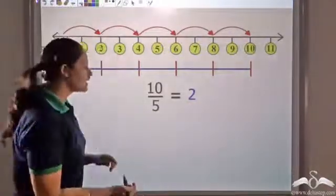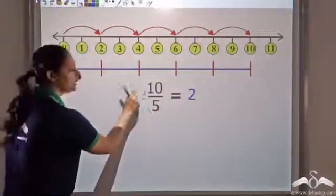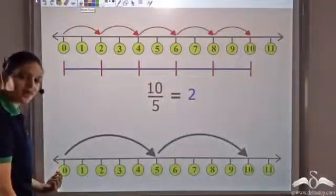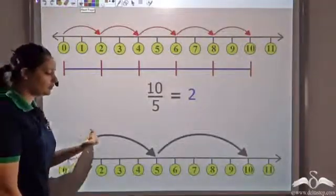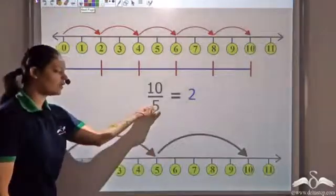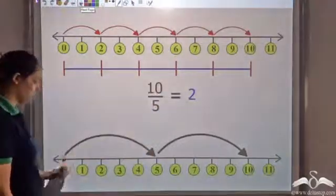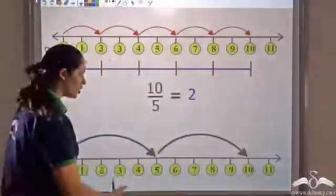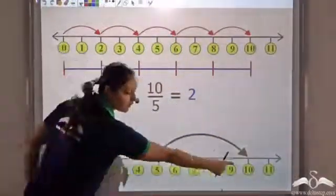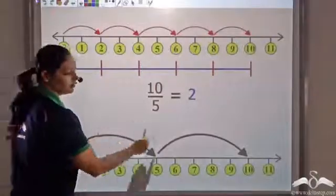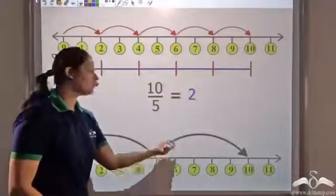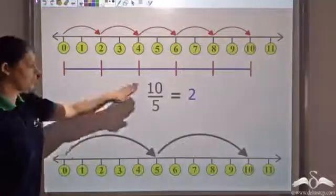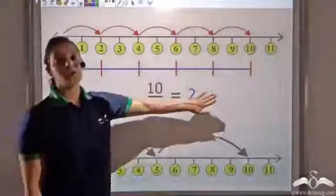Another way is: how many fives fit into ten? Starting from zero and jumping in intervals of five, I reach ten in two jumps. So two fives fit into ten evenly, confirming that ten divided by five gives me two.